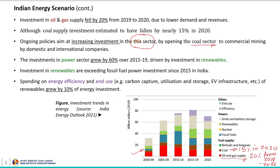Investment in the power sector grew by around 60 percent over 2015 to 2019, mainly driven by investment in renewables. Comparing the 2015–19 period with 2010–2014 clearly indicates a significant increase in power sector investment driven by renewables. Investment in renewables has been exceeding fossil fuel power investment since 2015 in India.